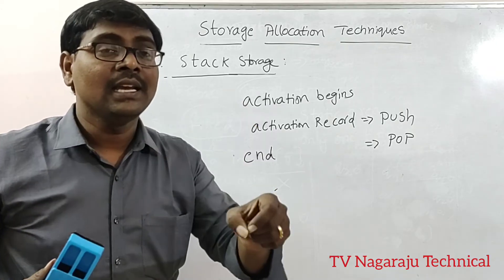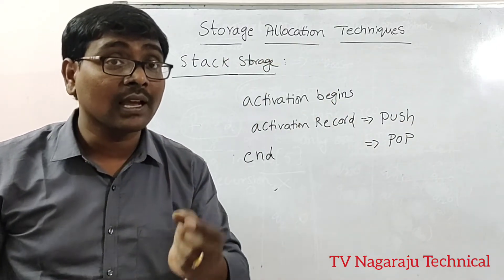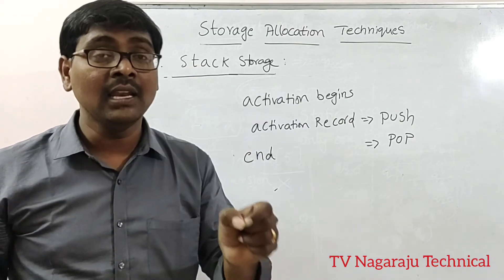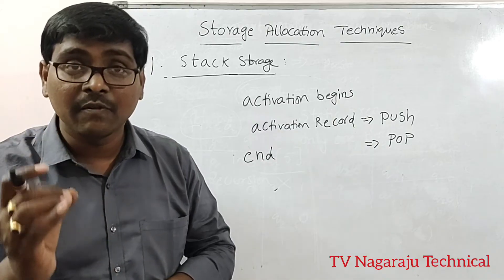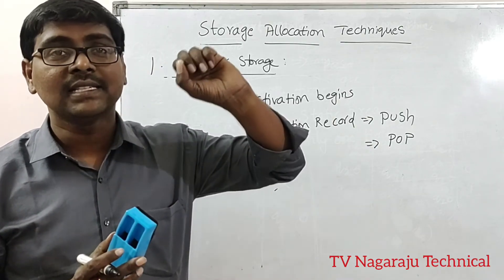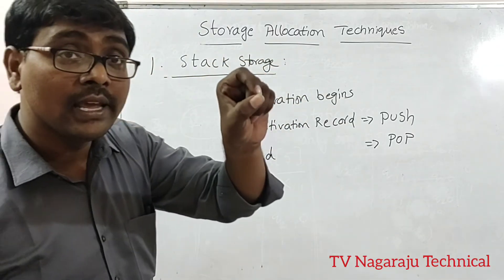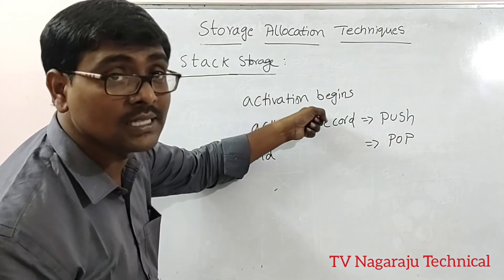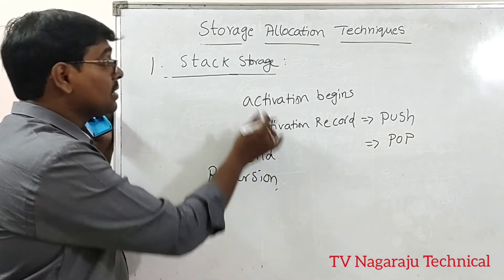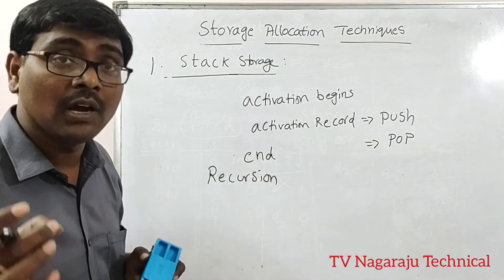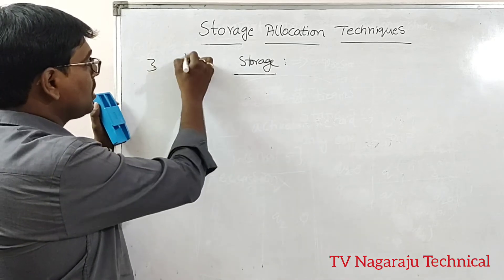Each and every activation pushes a record into the stack, and once execution is completed, it pops the record from the stack. This means it does not retain the local names — each and every time, fresh memory is allocated. Unlike static allocation where local names are retained, in stack allocation they are not. The main purpose of stack storage is to support recursion.